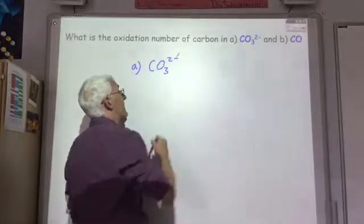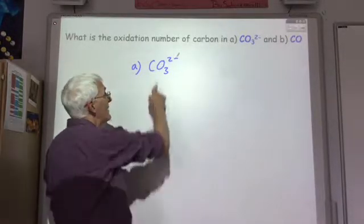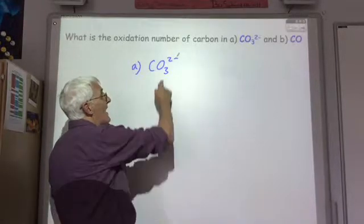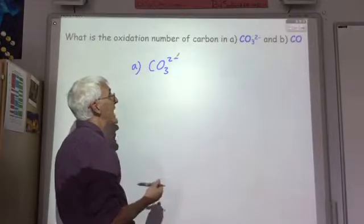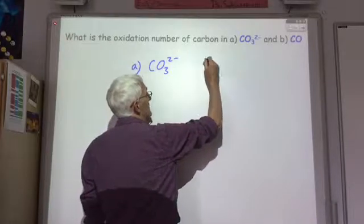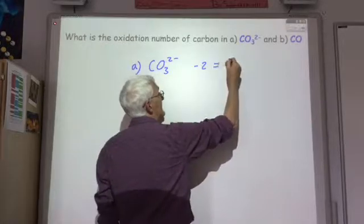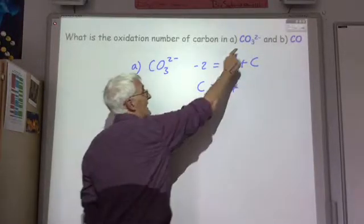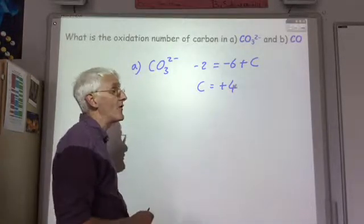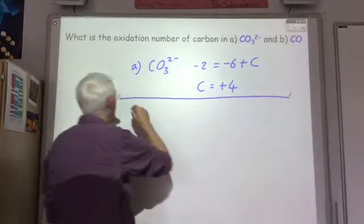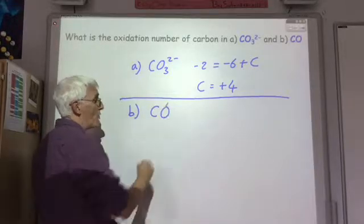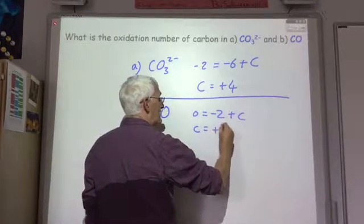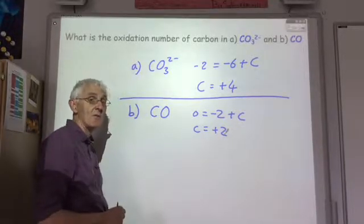For CO3 2-: we know that oxygen is minus two, and there are three oxygens giving a total of minus six. The overall charge is minus two, so the carbon must be plus four. So in carbonate, the oxidation number of carbon is plus four. In carbon monoxide, however, the overall molecule is neutral. The oxygen is minus two, so the carbon must be plus two. So in carbon monoxide, the carbon has an oxidation state of plus two.